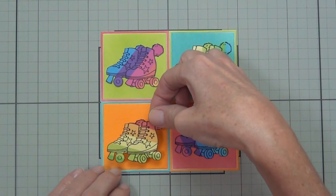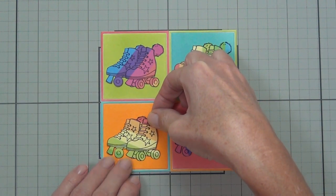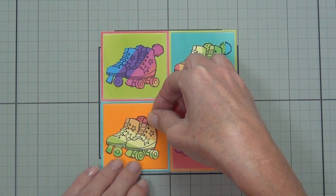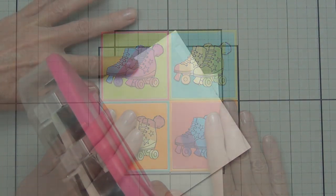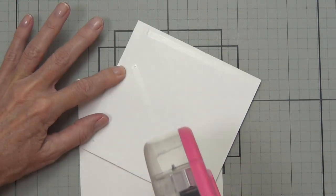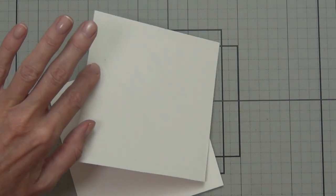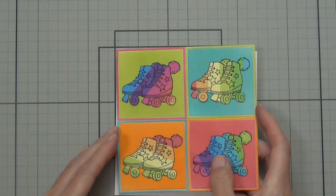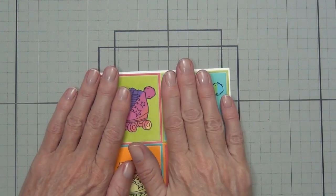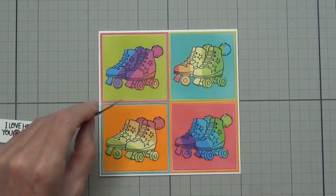I wanted it to be sort of skew because, you know, those Andy Warhol pictures are all a bit skew. So I thought this added to that. Then I added some ATG behind this to attach it to the front of my card and popped up my sentiment on some black cardstock. I do love how Catherine Pooler mixes and matches everything.